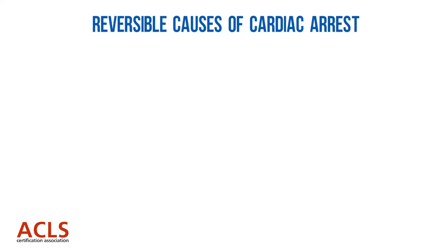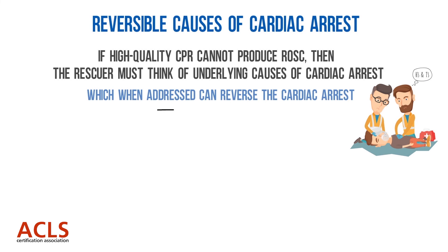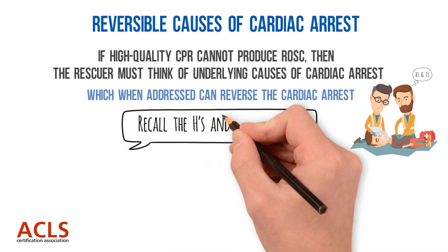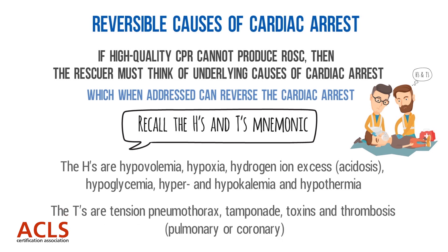If high-quality CPR cannot produce ROSC, then the rescuer must think of underlying reversible causes of cardiac arrest. Recall the H's and T's mnemonic. The H's are: hypovolemia, hypoxia, hydrogen ion excess (acidosis), hypoglycemia, hyper- and hypokalemia, and hypothermia. The T's are: tension pneumothorax, tamponade, toxins, and thrombosis — pulmonary or coronary. Refer to the H's and T's section of this course.